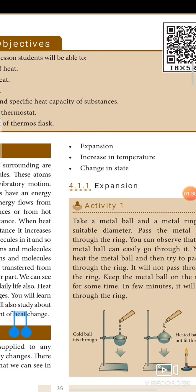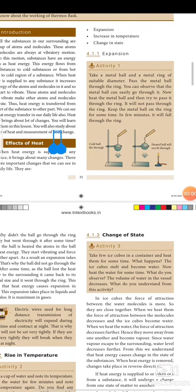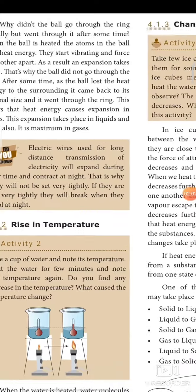Let's see an activity which explains expansion. Take a metal ball and a metal ring of suitable diameter. Pass the metal ball through the ring — you can observe that the metal ball can easily go through it. Now heat the metal ball and then try to pass it through the ring. It will not pass through the ring. Why? The metal ball on heating expands, so heat energy expands the materials. That is the first effect of heat energy.